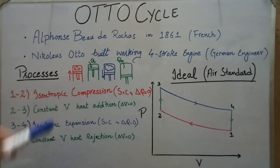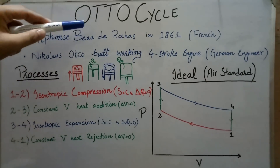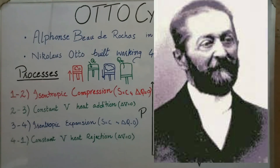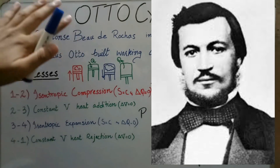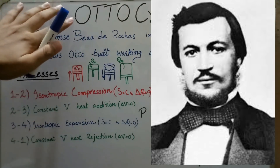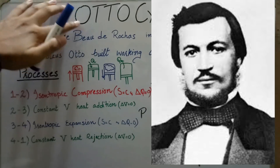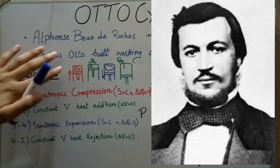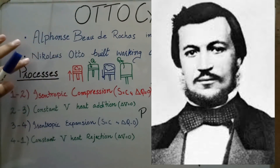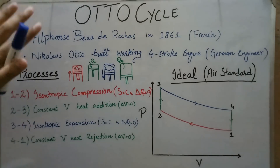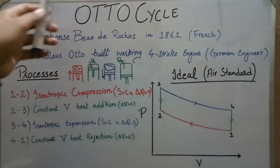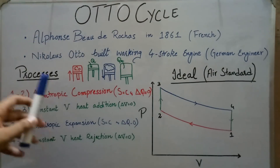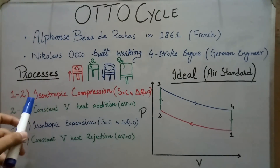The Otto cycle was first given by Alphonse Beau de Rochas in 1861 — he was a French scientist — but Nikolaus Otto built the very first four stroke working engine based on the same cycle, which is why the cycle is named after Nikolaus Otto.